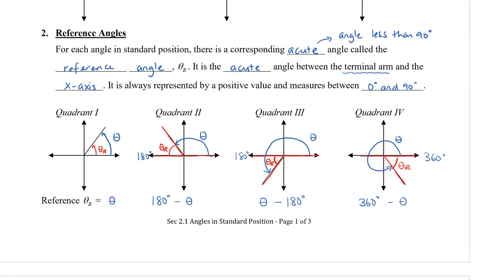Important to note: angles that are in standard position, such as theta, and their reference angles will have the same trigonometric ratio, except the sign will differ — which we'll take a look at later on in the next section.